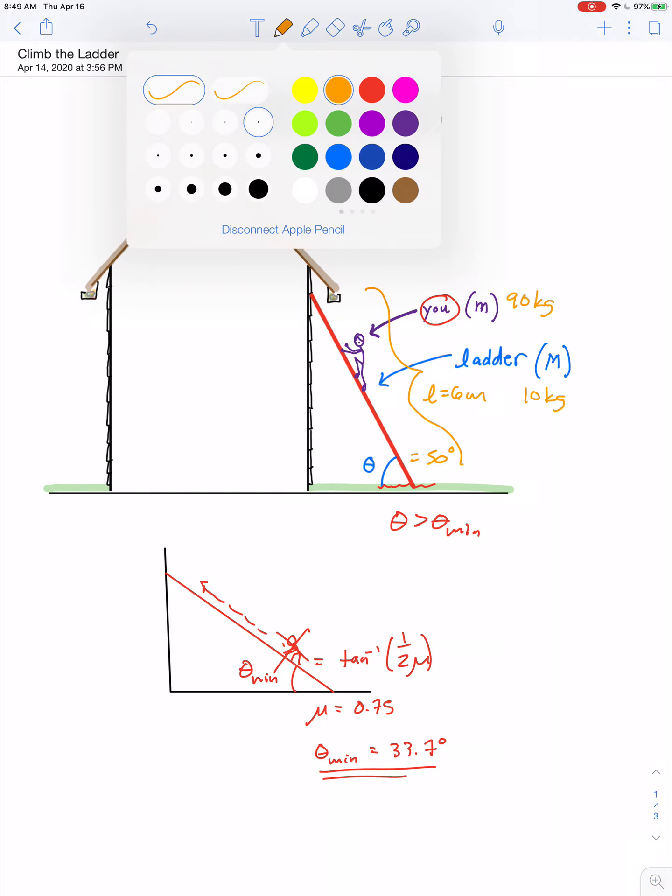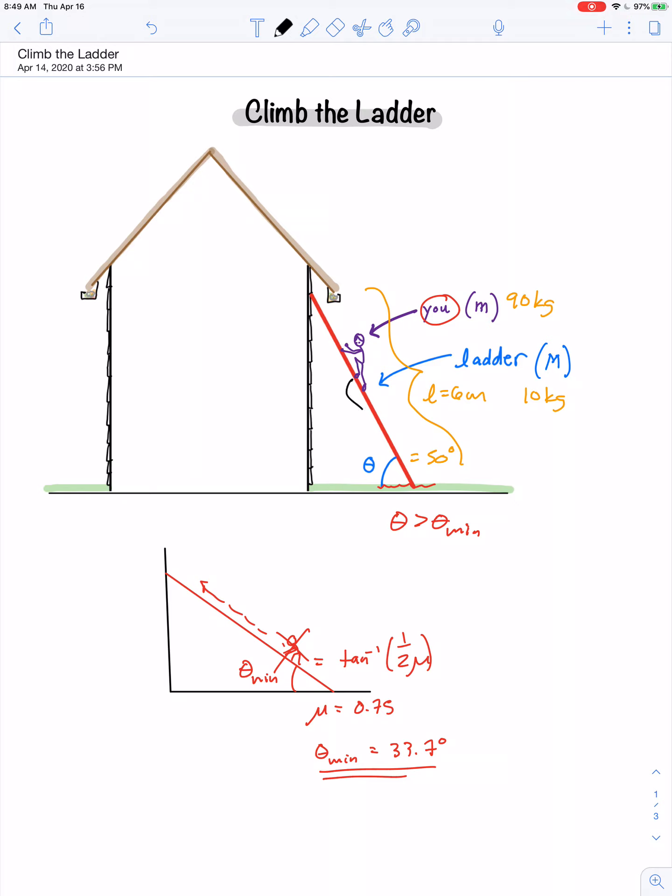So let's draw this again and figure out how far up the ladder he would be able to climb. Now if that answer for x, let's change it from x to d, if the answer for d comes out to be greater than 6 meters, then it means he can not only climb to the top, but when he's at the very top it would still be extremely stable. So let's see if we can derive an equation for d in terms of the person's mass, the ladder's mass, the length of the ladder, and the angle at which it's inclined.